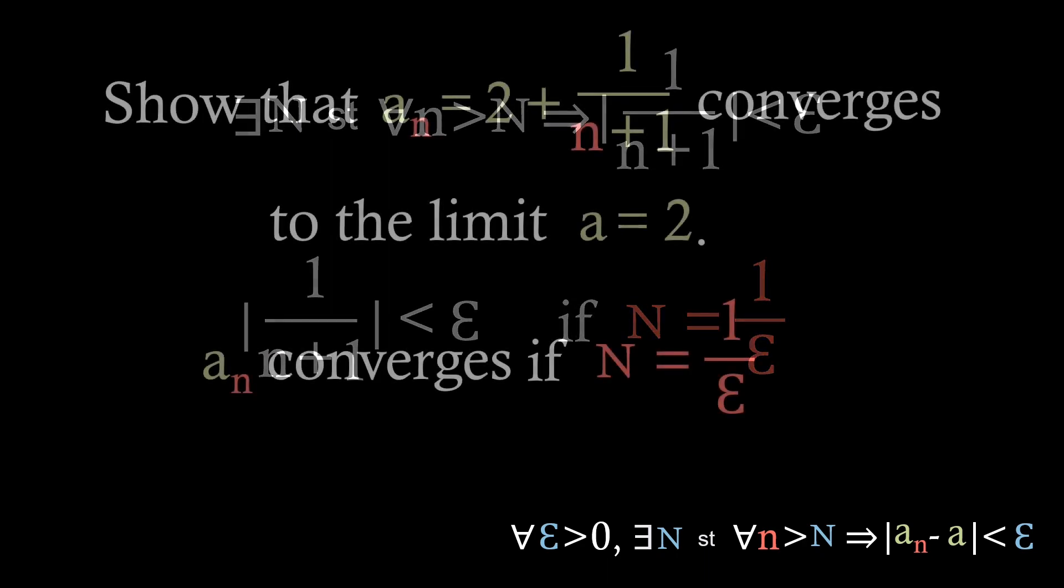So there we go, we've shown that for the sequence a_n equals 2 plus 1 over n plus 1 that it converges to the limit a equals 2. We've shown this using that formal definition we've got in the bottom right corner. So just to recap what we did is we let epsilon be greater than 0, then we looked at that final statement, that absolute value, and figured out what we needed the big N term to be so that the whole statement holds.